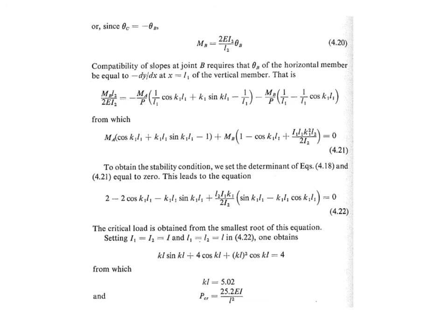The critical load is the smallest root of the stability condition, obtained by setting the determinant of the equations to zero: 2 − 2cos(K₁L₁) − K₁L₁ sin(K₁L₁) + (L₂I₁K₁)/(2I₂)[sin(K₁L₁) − K₁L₁ cos(K₁L₁)] = 0. Assuming I₁ = I₂ = I and L₁ = L₂ = L, this gives KL sin(KL) + 4cos(KL) + KL² cos(KL) = 4, from which KL = 5.02. Substituting K² = P/EI gives the critical buckling load PCR = 25.2EI/L². This is the critical buckling load for the frame with sidesway prevented.